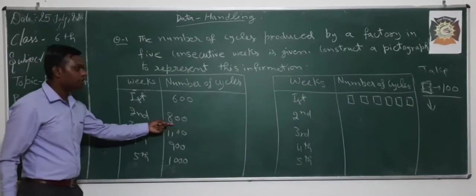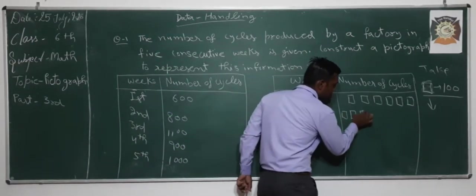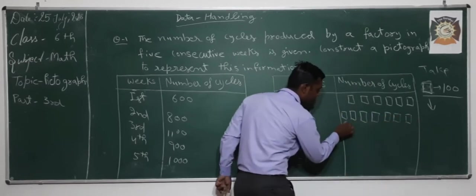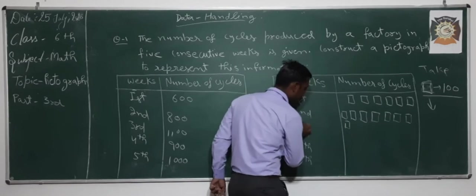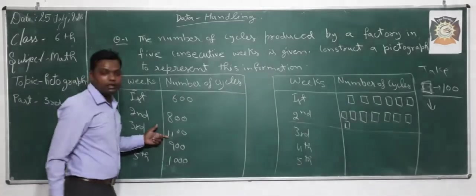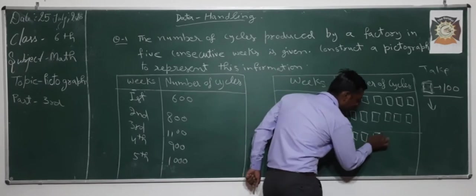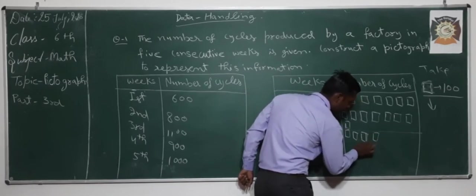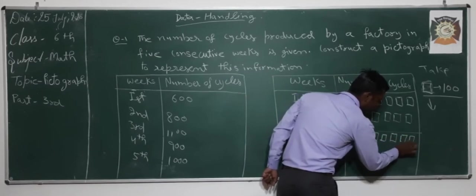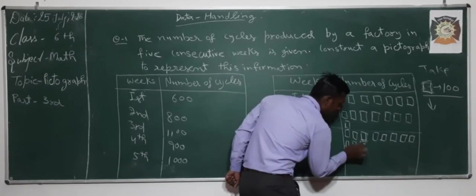For the next week, there are 800 cycles, so we write 8 scales. And for the third week, we have to represent 1100 cycles, so we have to write 11 scales.